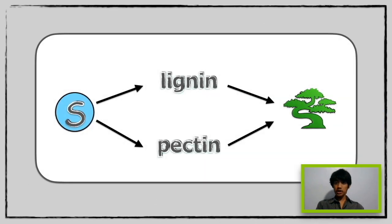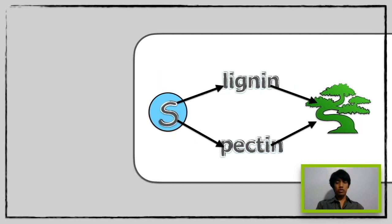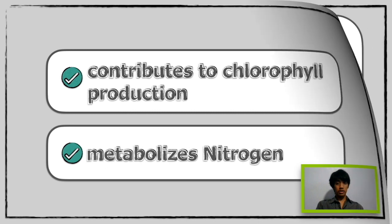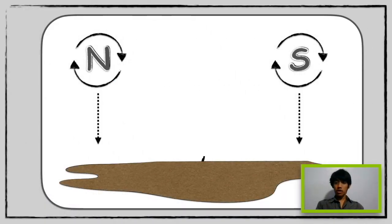Sulfur produces lignin and pectin, which are organic compounds that help plants grow. Sulfur contributes to floral production. Most importantly, sulfur metabolizes nitrogen. Through nitrogen and sulfur cycles, the elements are deposited into the soil and converted into consumable organic compounds, which are then absorbed and used by plants.